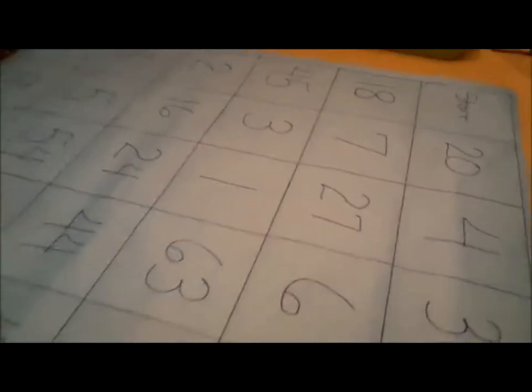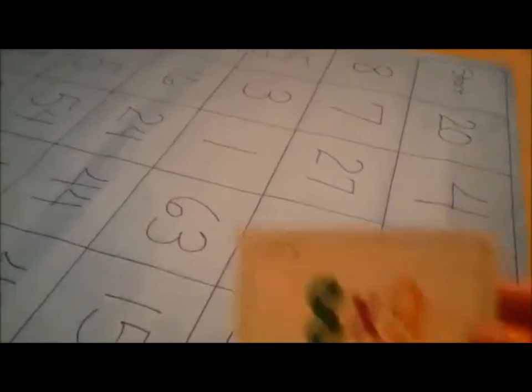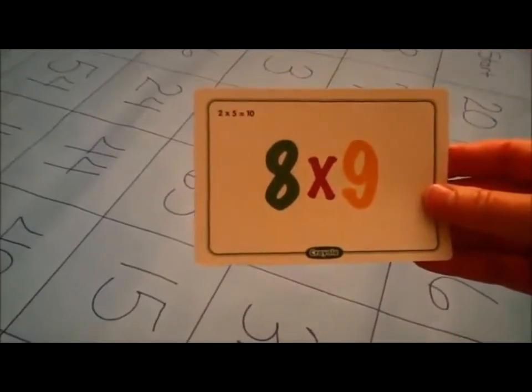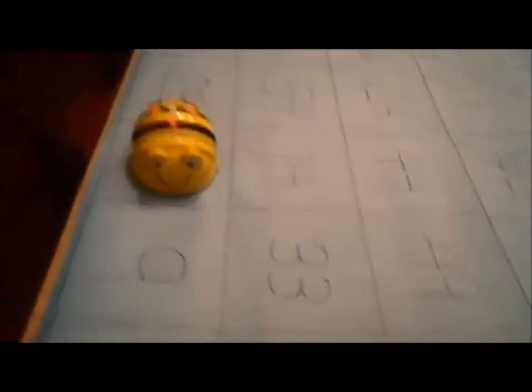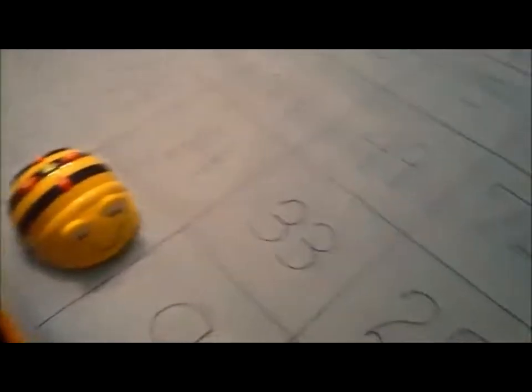Alright, so now it's my turn, and I'm going to draw a card out of the box. And I drew 8 times 9. And 8 times 9 is what, Lance? 72. So you can check the back of that card and see if it's right, and I'm going to find 72 on the board. 72 is right. Okay.